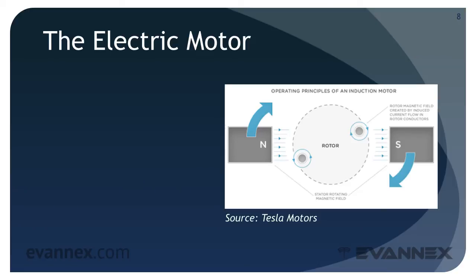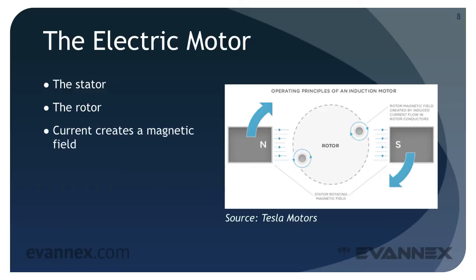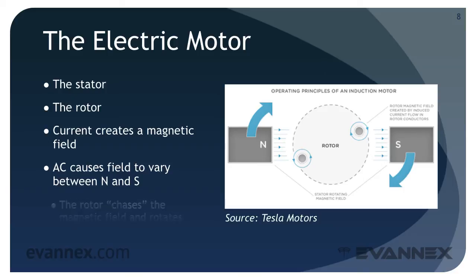To understand how regenerative braking happens, we have to re-examine the electric motor. As discussed in an earlier EVU mini-course, coils of copper wire run through a stack of thin steel plates and form something called a stator. The rotor is a steel shaft with copper bars running through it; it rotates and ultimately turns the wheels of the EV. The flow of alternating current into the copper windings of the stator creates a magnetic field. Alternating current causes the field to vary between north and south, appearing to move in a circular path. The rotor chases the magnetic field and rotates as a consequence.